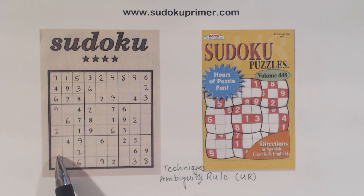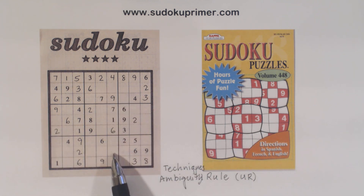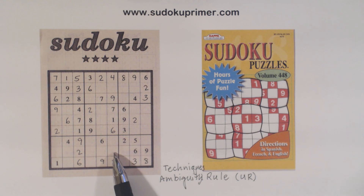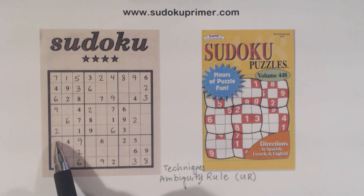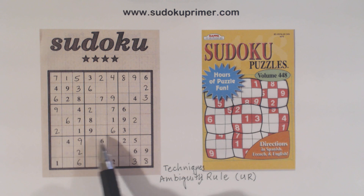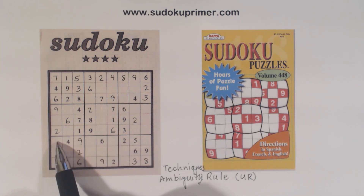The next thing I noticed is that there are 3 numbers missing here and here, and they're 3, 5, and 8. So this cell right here has to be a 3, 5, or an 8, and this cell has to be a 3, 5, or an 8. Now let's say that this is a 3 or an 8 — so we have 3-8 twins there, and we know these are 3-8 twins right here.